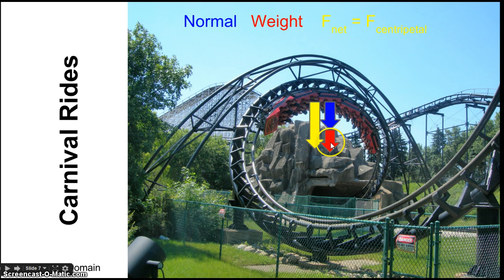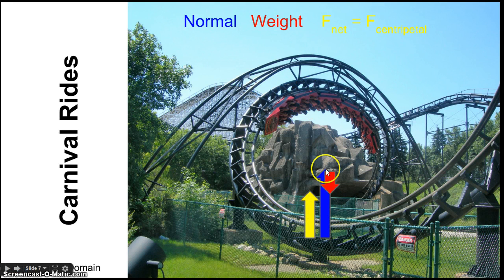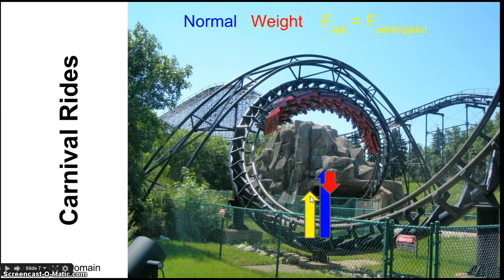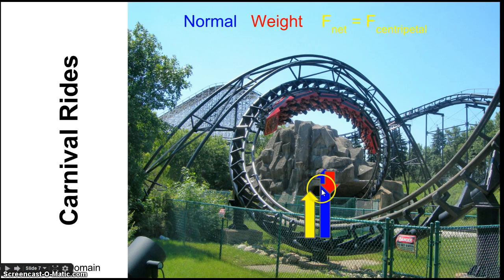If you go faster, normal force and weight both add together to supply the centripetal force. At the bottom of a circle, it's very different: the normal force must be much larger than your weight, because it has to both balance gravity and supply the force to keep you turning rather than going straight. The normal force gets very large at the bottom of any hill or turn on a roller coaster, and also on a swing.